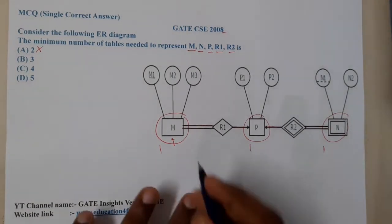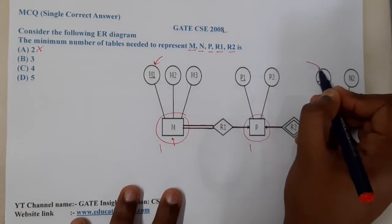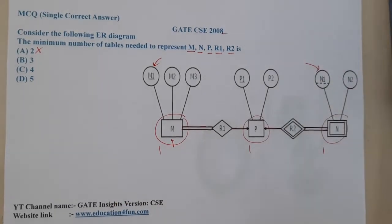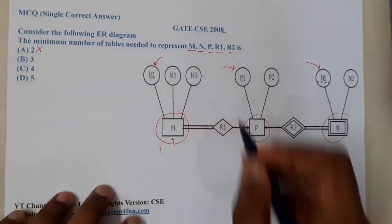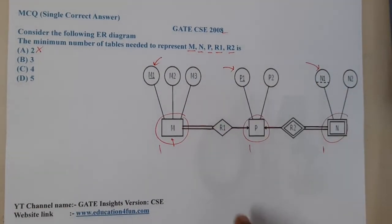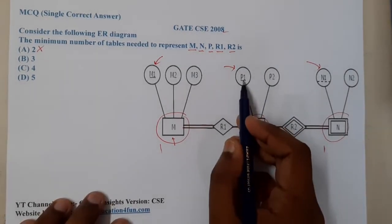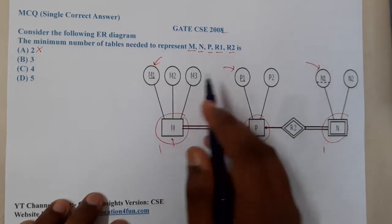He clearly told that here M1 is primary key and here N1 is primary key. So indirectly whenever he is saying in this way, and he told this is the primary key, if we want to maintain the relation, this relation is like one to many only. So I think it will be better if we bring this particular P1 towards this. I will add P1 here.